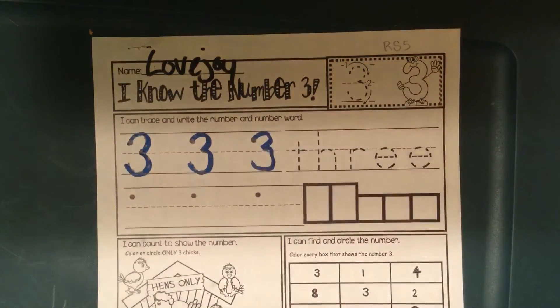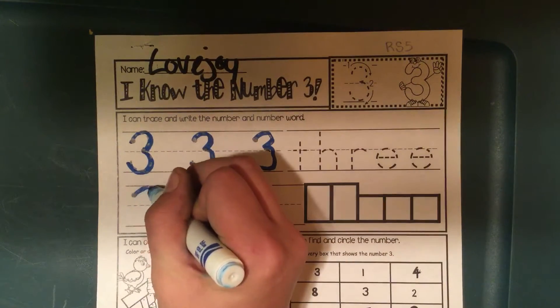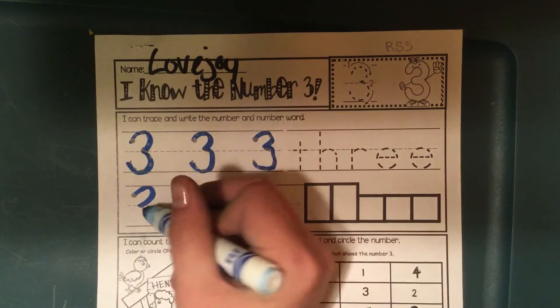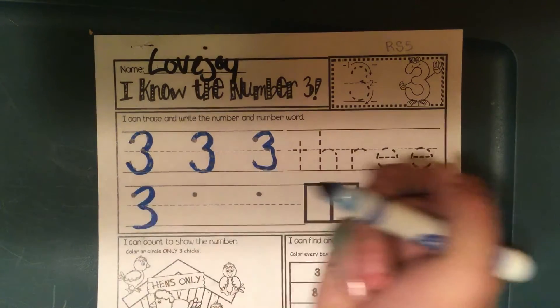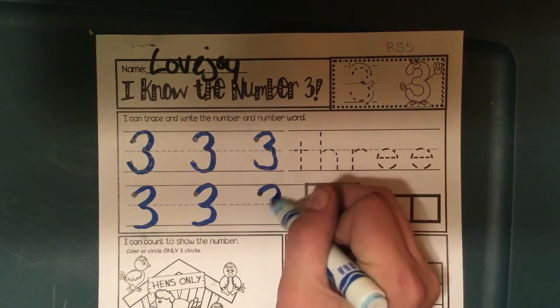Just like that. And then I'm going to practice down here. So start at the dot, go up to the top, touch the middle line, go down, touch the bottom line. Around a tree, around a tree. That's how I make a 3.